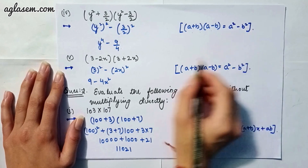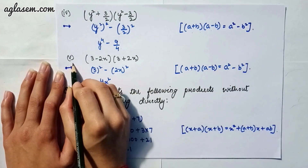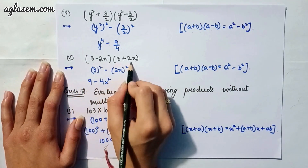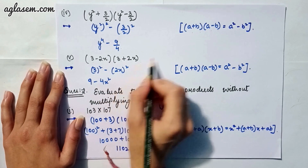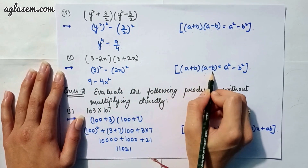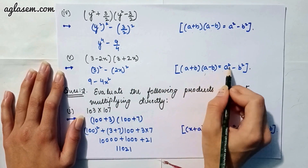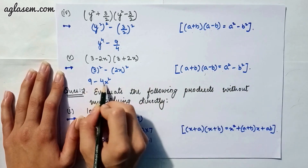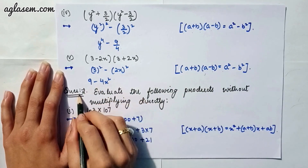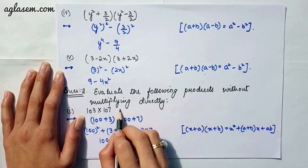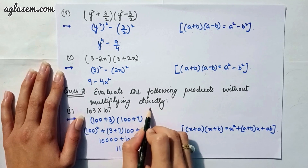Moving to our fifth part: (3 − 2x)(3 + 2x). Applying the identity (a + b)(a − b) = a² − b², the answer is 9 − 4x². Moving to our second question, which says: evaluate the following products without multiplying directly.